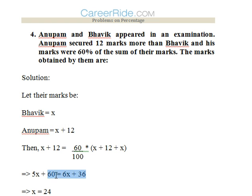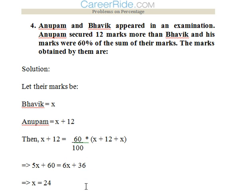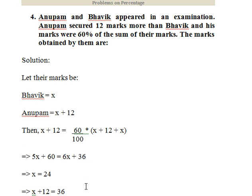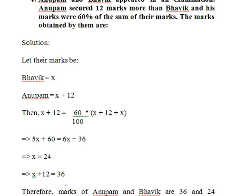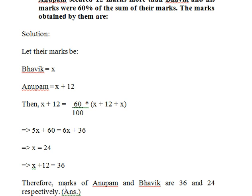Solving for x: 5x + 60 = 6x + 36, giving us x = 24. Adding 12 we get 36. Therefore the marks of Anupam and Bhavik are 36 and 24 respectively.